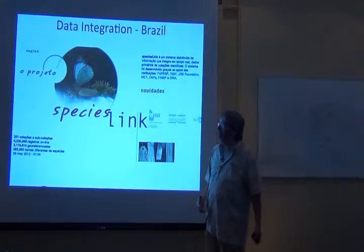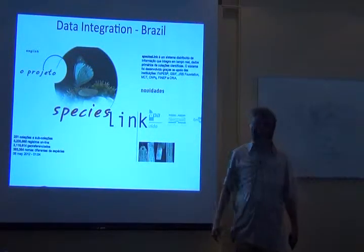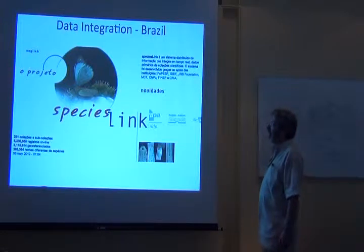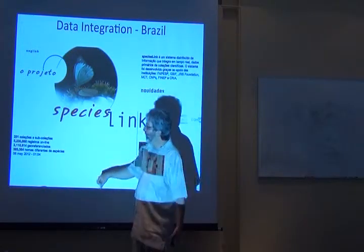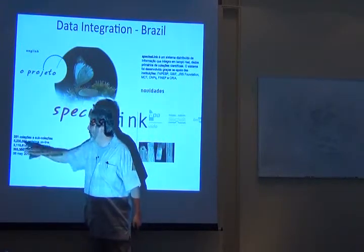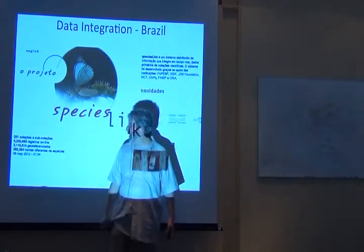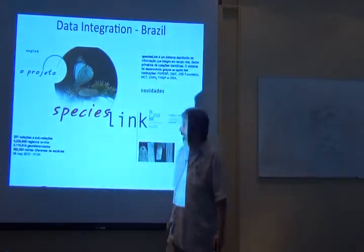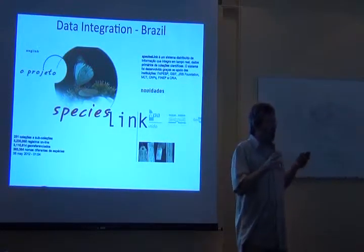Then we can go on to data integration. I'm giving you all Brazilian examples in honor of two of our experts. This is the SpeciesLink Network. This is just Brazil, 251 collections, 5.2 million records, of which just less than half are geo-referenced, and they refer to 393,000 names.